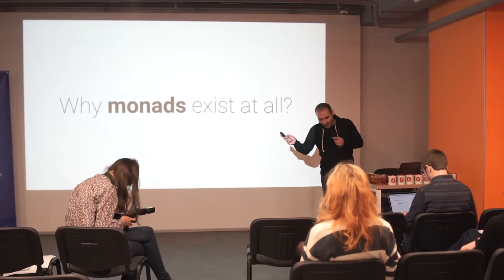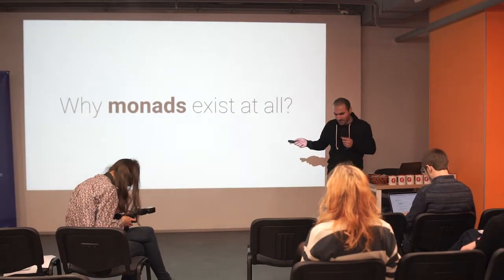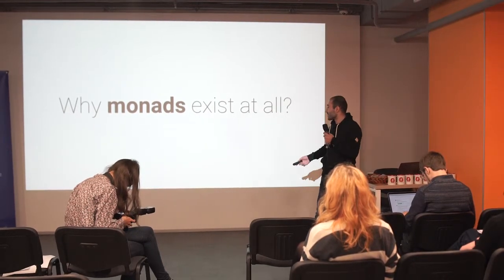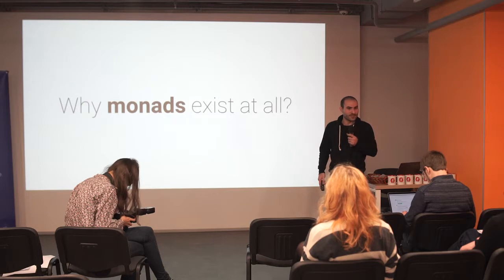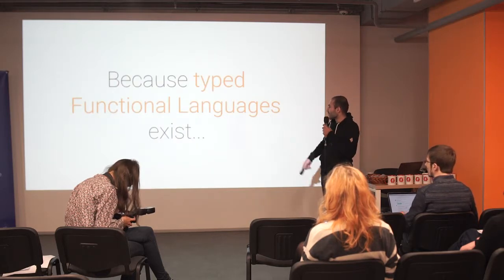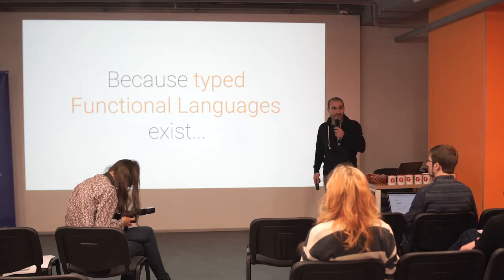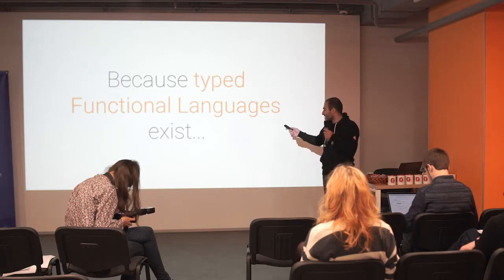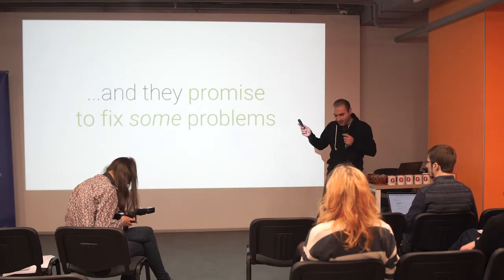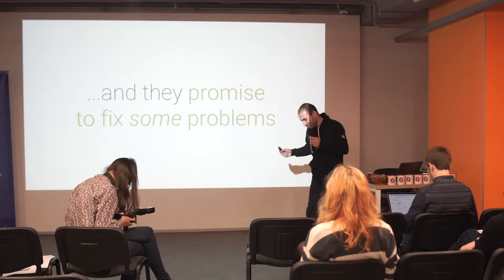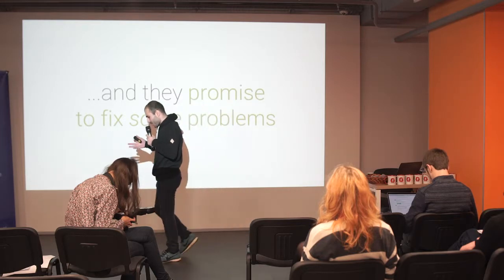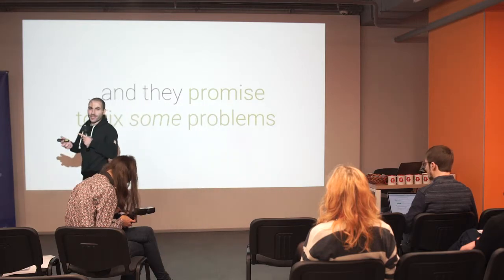Why do they exist at all? There is a concept that exists in programming languages like classes or types, and they all exist for some reason, so we use them. They exist almost because of functional languages — strictly typed functional languages. And they exist because these languages promise something.